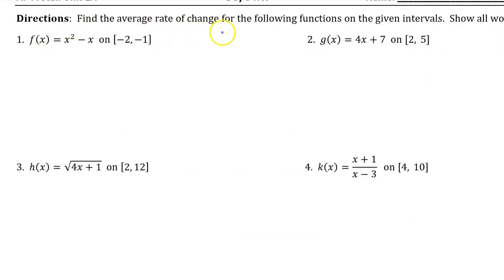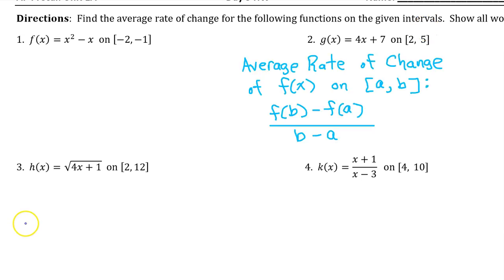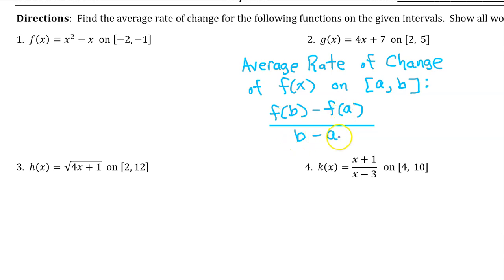Find the average rate of change for the following functions on the given intervals. The average rate of change of f(x) on the closed interval from a to b is f(b) minus f(a) over b minus a. This is just the slope of the secant line from a to b — think y minus y over x minus x.